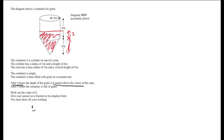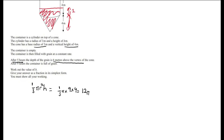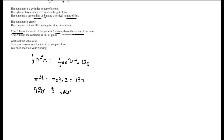The volume of a cone is a third pi r squared h. Here we know that the radius is 3 metres and the height is 4 metres, so we can write this as a third pi times 9 times 4, which is 12 pi. To calculate the volume of grain in the cylinder, the formula is pi r squared h. We've got a radius of 3 and a height of 2, so this is pi times 9 times 2, which is 18 pi. Overall, after 5 hours, we've got 12 pi plus 18 pi, so 30 pi.